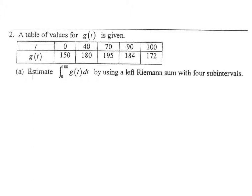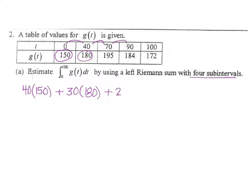For our next problem, we do a left Riemann sum with four subintervals. The widths here are different: 40 times 150 (leftmost), plus 30 times 180, plus 20 times 195, plus the next interval times 184. Notice the widths vary, and that is perfectly okay. Number crunching all of that gives a rather large number: 17,140.